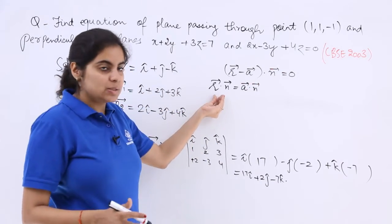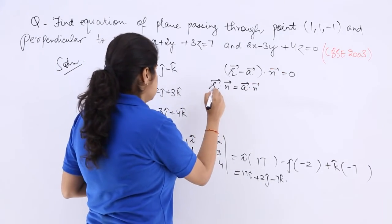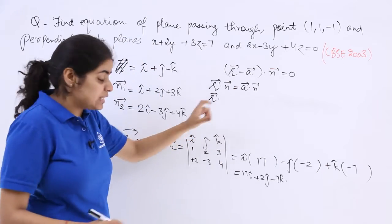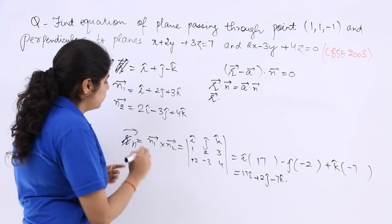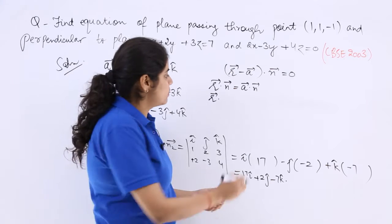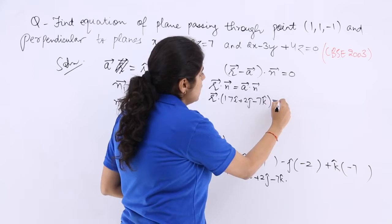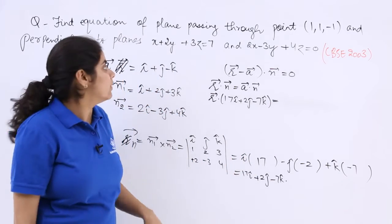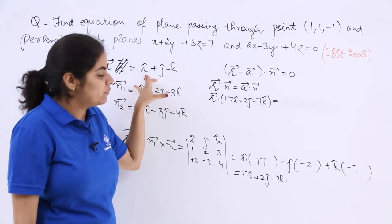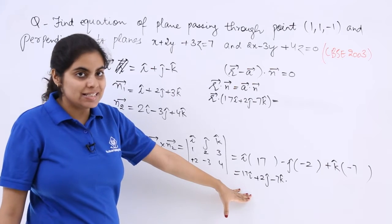Now here r vector has to remain as it is and n vector—this should have been n vector. So n vector is 17i plus 2j minus 7k vector equals a vector dot n vector. This upper one is a vector as I told you, and this is n vector.